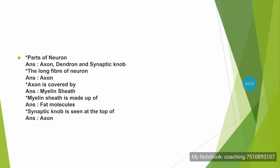The parts of a neuron are the axon, dendron, and synaptic node. The long fiber of the neuron is the axon, and the axon is covered by a myelin sheath. The myelin sheath is made up of fat molecules. The synaptic node is seen at the top of the axon.